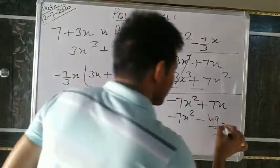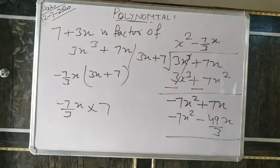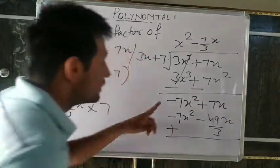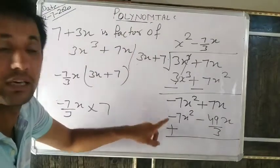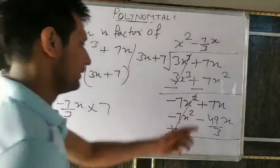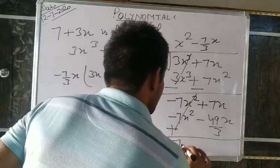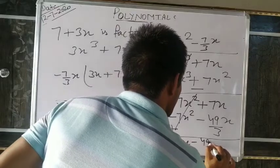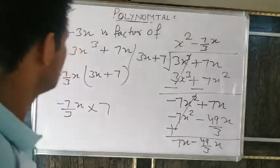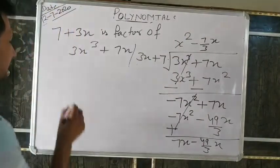So what is the remainder? The remainder is −28x/3, which is not zero. Therefore, since remainder is not zero, we write: remainder is not zero. Therefore 7+3x is NOT a factor of 3x³+7x. Understand?